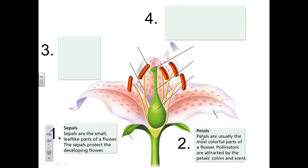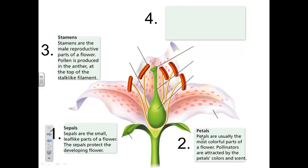The petals are usually the most colorful parts of the flower. The pollinators and animals are attracted by the petals' colors and scents. The stamen are the male reproductive parts of the flower. Pollen is produced at the anther at the top, and the stem-like part is the filament.